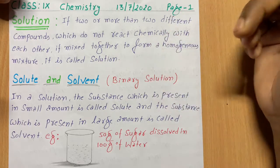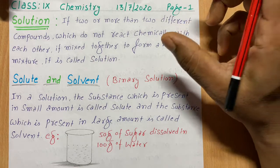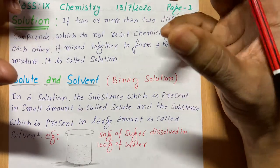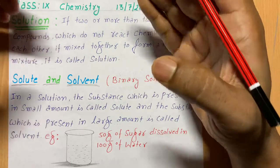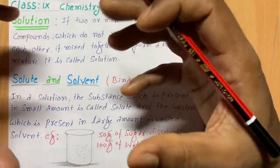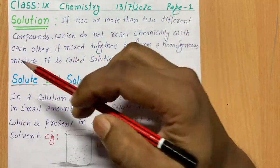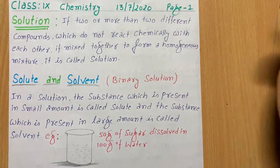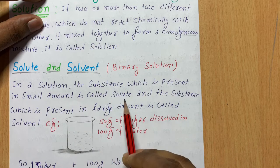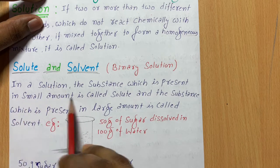For example, if you have water and sugar, you are adding two different compounds, and that makes a binary solution. Binary means only two things are present. In a solution, the substance present in the smaller amount is called the solute, and the substance present in the larger amount is called the solvent.